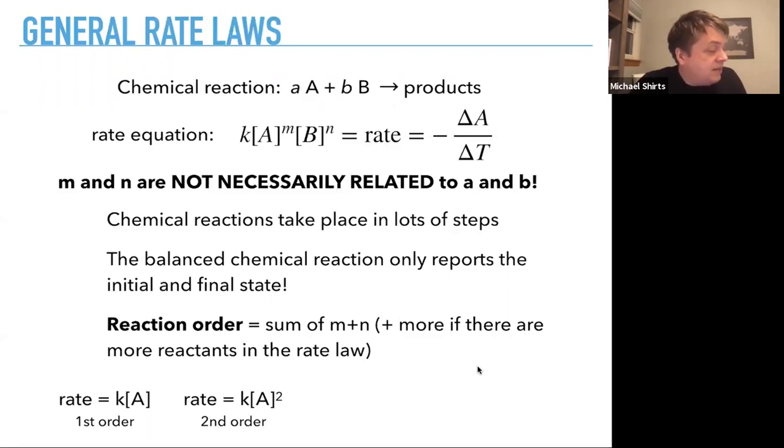The rate, if it's proportional to the concentration of A squared, that's second order. It's also second order if it's the concentration of A times the concentration of B, that is still second order, and if it doesn't depend on the concentration of anything, if it's just equal to a constant, it's the zeroth order, since m and n are all zeros.